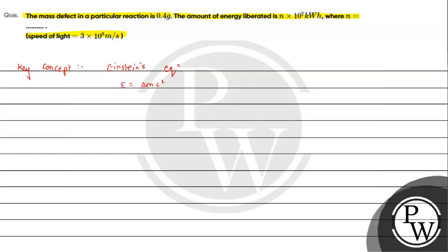Now delta m is the mass defect. In this form we can write Einstein's equation in terms of mass defect. So here we can see that in the question we can directly apply this formula.